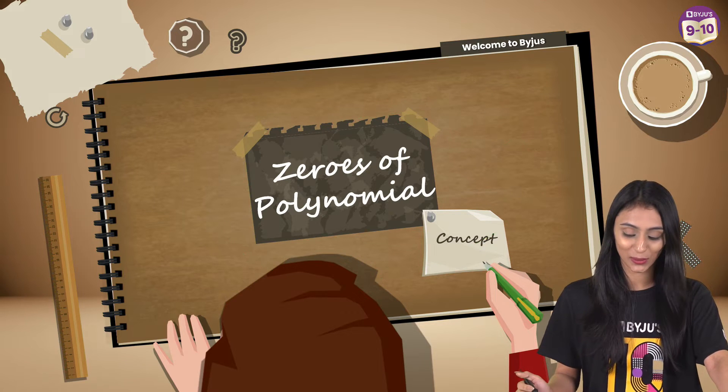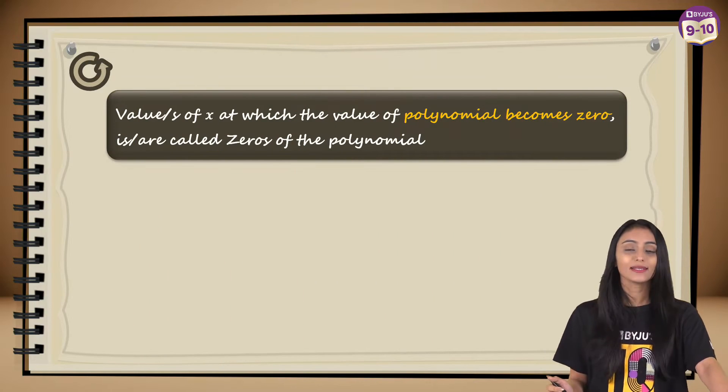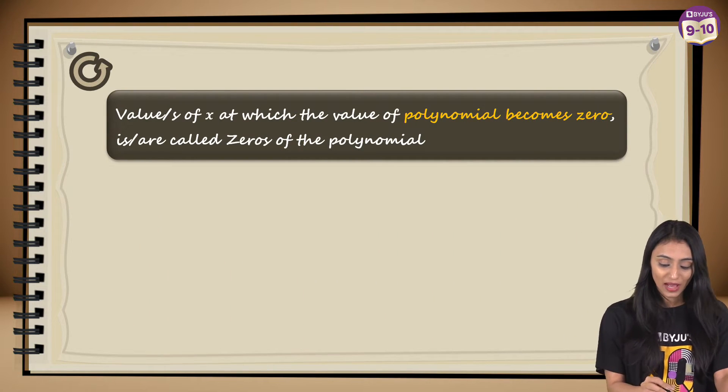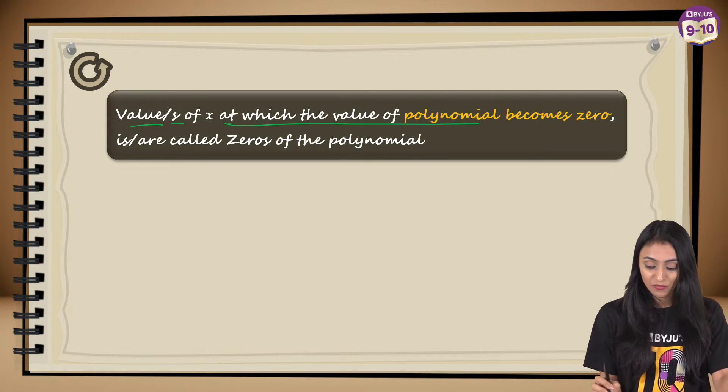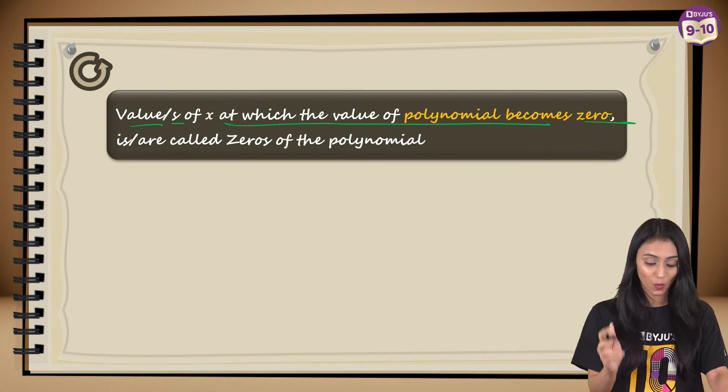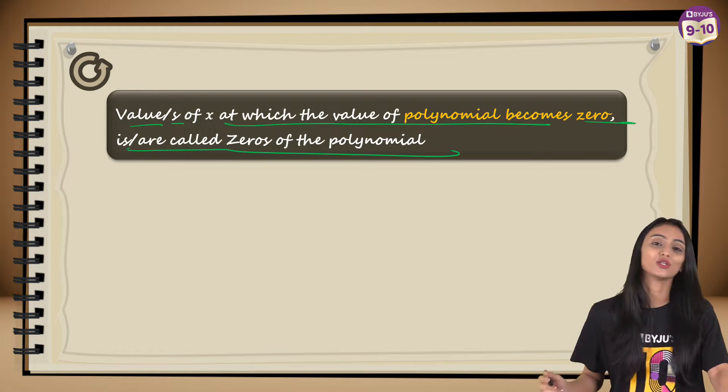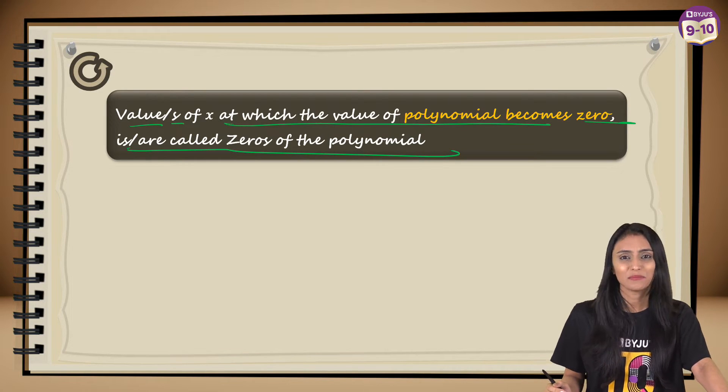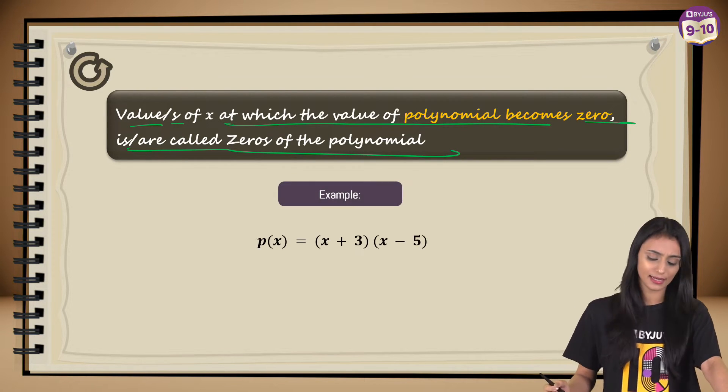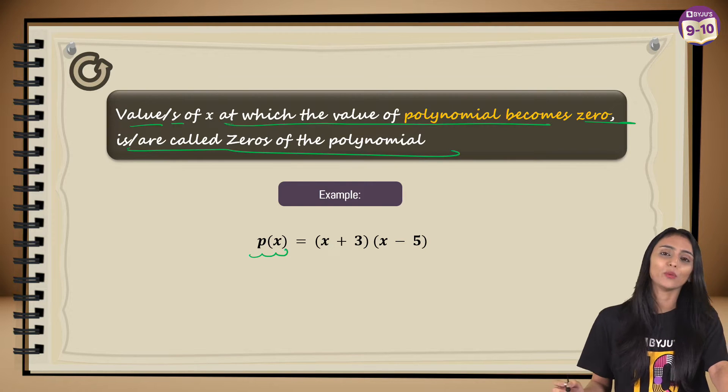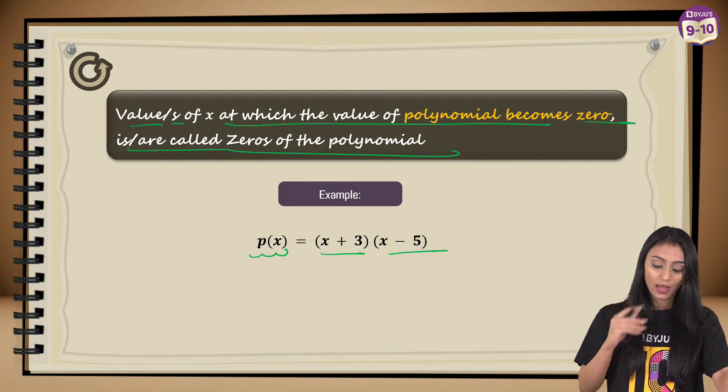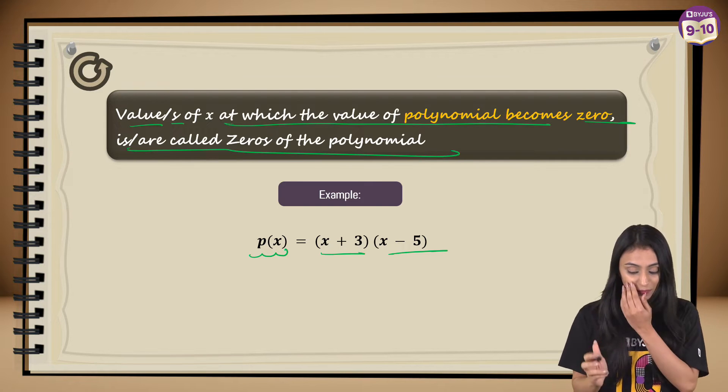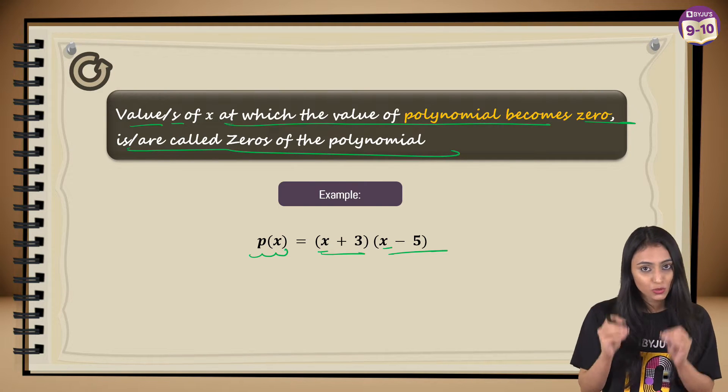Zeros of a polynomial. So what is a zero of a polynomial actually? Value or values of x at which the value of the polynomial becomes zero is or are called the zero of the polynomial. What does that mean? Let's take an example to understand this. Let's suppose we have got a polynomial in x: (x + 3)(x - 5). So that value of x which I substitute here and the value of this entire polynomial becomes zero.